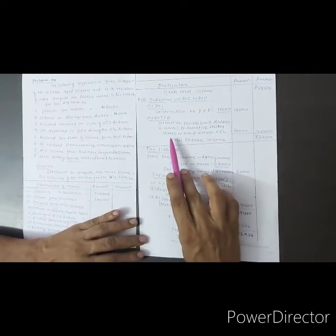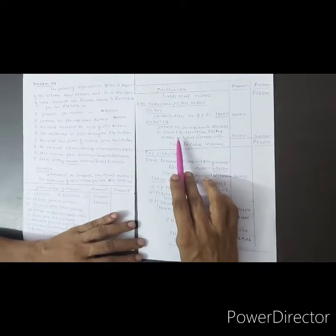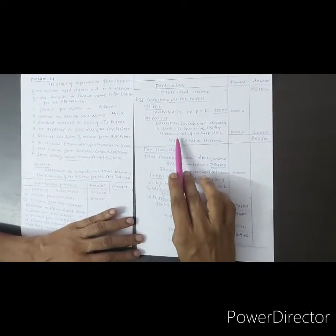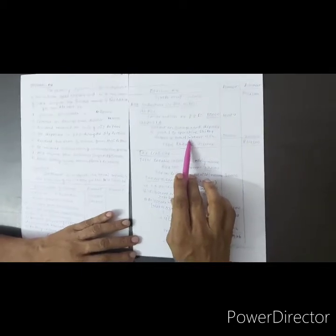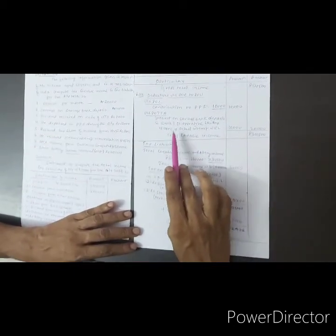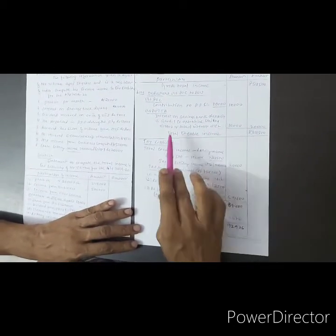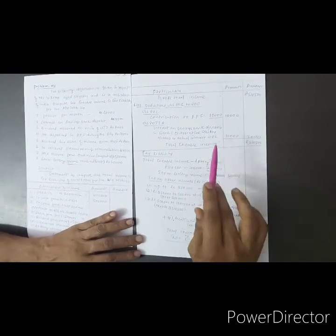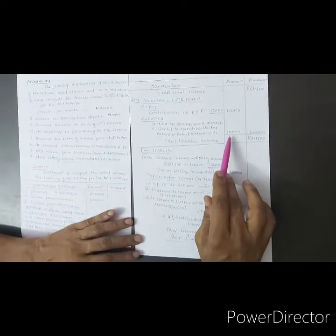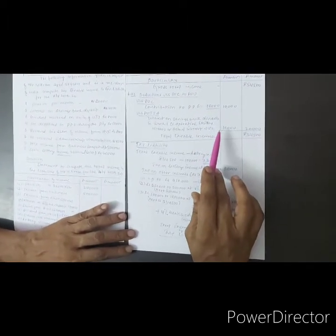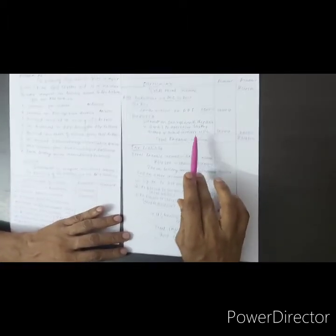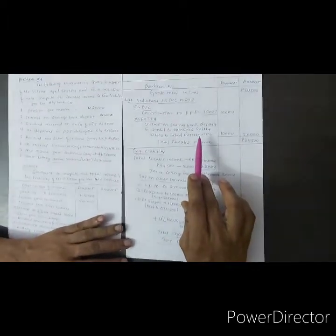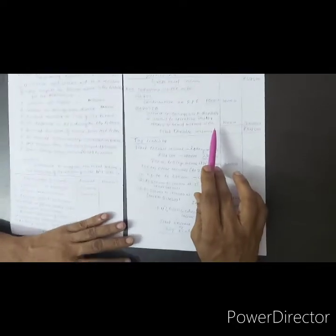Maximum is 10,000 rupees. If the interest exceeds 10,000, only 10,000 is deducted and the balance is taxed. Within 10,000, the actual amount of interest received is deducted. Here the actual amount of interest is 10,000 rupees, so the deduction is 10,000 rupees.